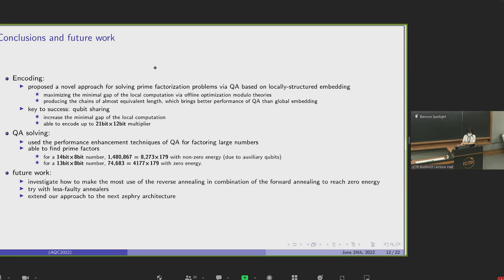To conclude, we propose another approach for solving prime factorization problems via quantum annealing based on locally structured embedding. Our approach maximizes the minimum gap of the local computation via optimization modulo theories, and we can produce chains of almost equivalent length or less chains, which is expected to bring better performance than global embedding. And we show the qubit sharing techniques can be used to encode up to 21-bit times 12-bit multipliers, and we demonstrate the pulsed annealing and reverse annealing can be used to find the solutions of prime factorization. Our future work goes into three directions: investigating how to make the most of reverse annealing in combination with forward annealing to reach zero energy, try with less faulty annealers if possible, and extending our approach to the next hardware architecture, Zephyr.